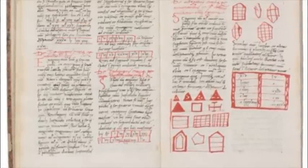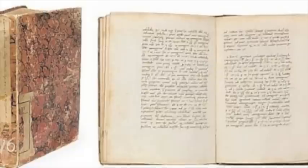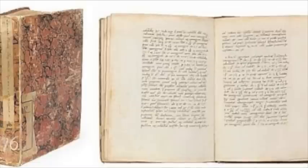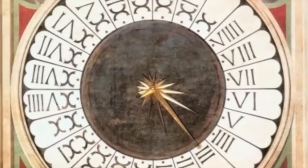His book on how to do arithmetic in the decimal system, called Liber Abaci or Book of Calculating, was completed in 1202 and persuaded many European mathematicians of his day to use this new system.